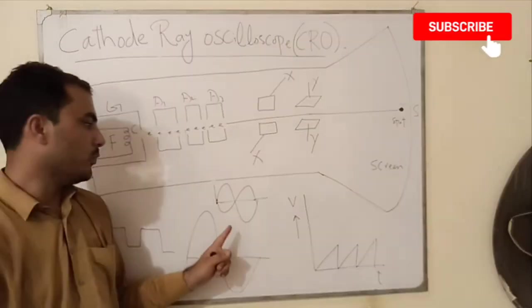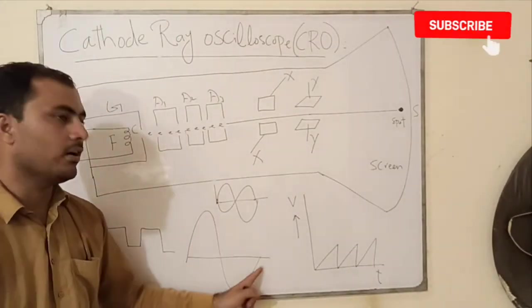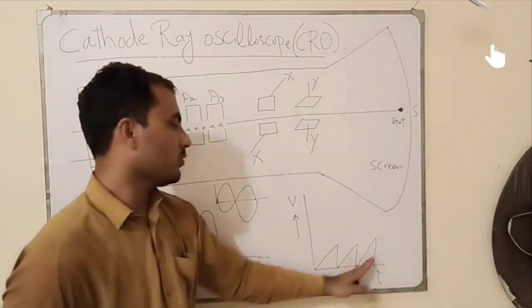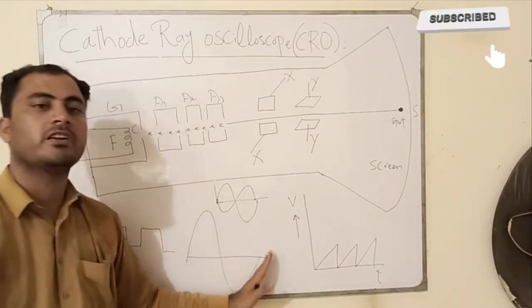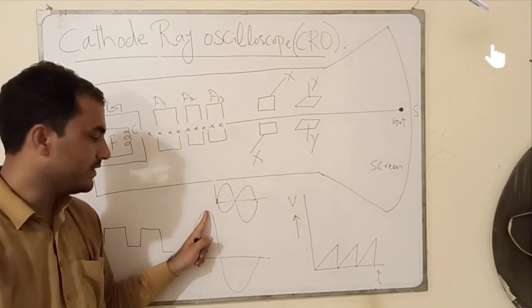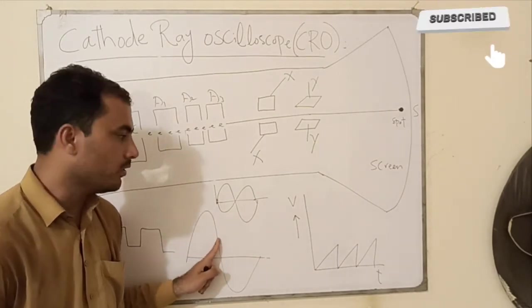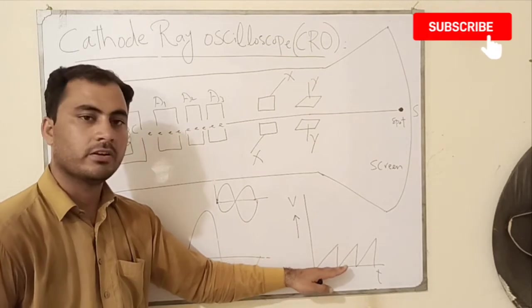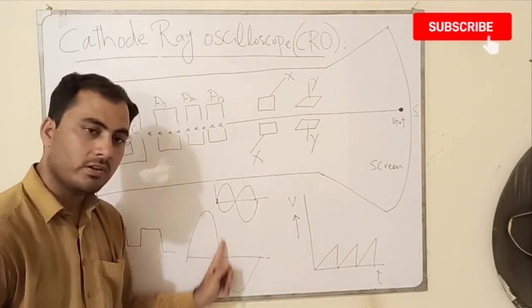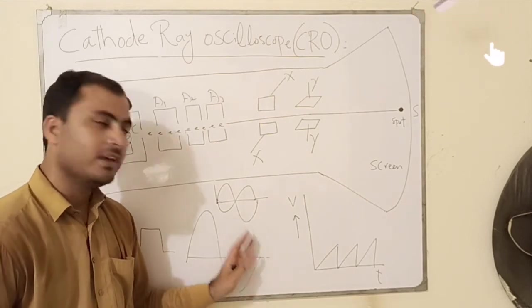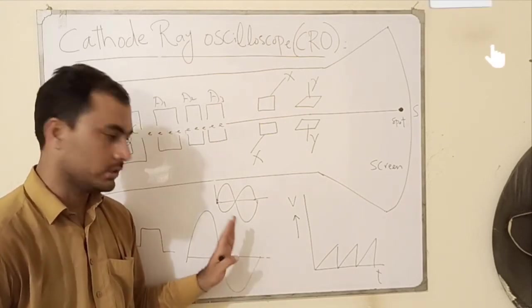Once the waveform is displayed on Cathode Ray Oscilloscope screen, for example this sinusoidal voltage, then we can easily determine the peak value of the voltage, the instantaneous value of the voltage, the time period, the frequency of particular voltage or current signal.